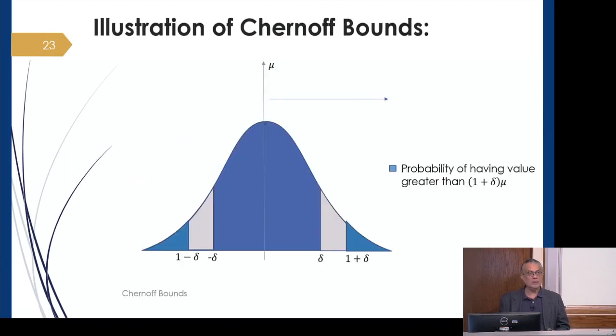Pictorially, if you look at this as our distribution with the mean here and delta there, as you get further away, the area under this region—say the gray region or this blue region—is much smaller than the region adjacent to the mean μ. Therefore, the probability of having value greater than (1+δ)μ goes down much faster. That's the intuition.